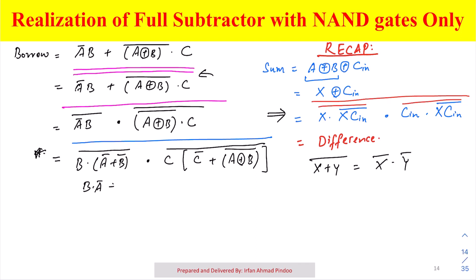But B into B bar is equal to zero, so this term is not there. It will be simply B into A bar, which is same as the original one.